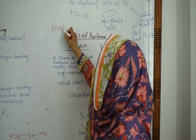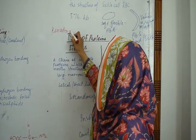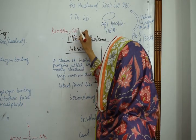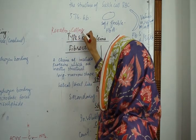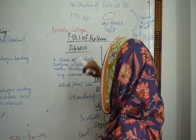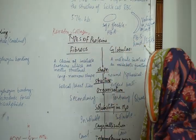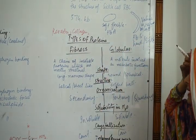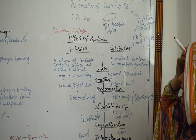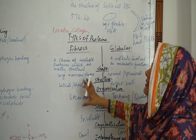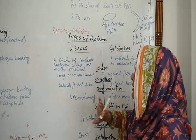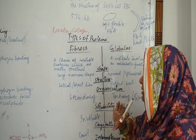Examples of fibrous proteins include keratin, collagen found in your bones, structures, and cartilage — all of these are fibrous proteins.